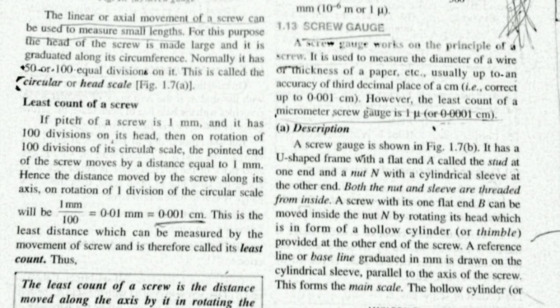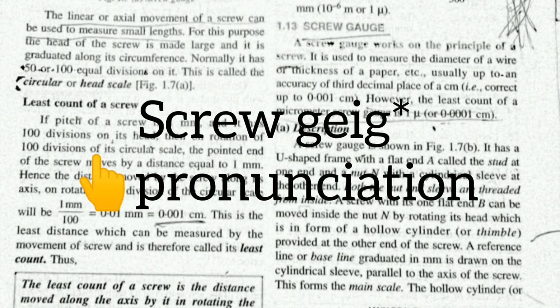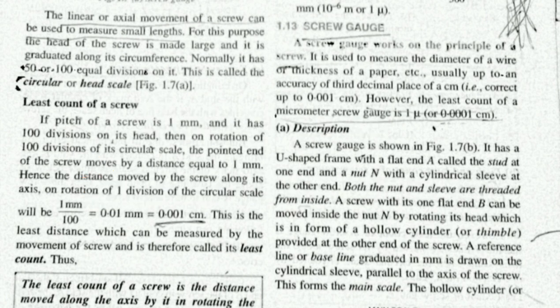Next is screw gauge. Let me tell you — if you think I am pronouncing it wrong, you are wrong. It is not 'gauze', it is 'gauge' — screw gauge. By using the screw gauge, you can measure wire thickness, paper thickness, or wire diameter. And importantly, its least count is up to 0.001 cm.